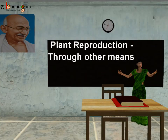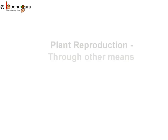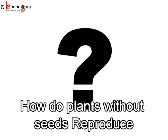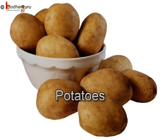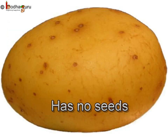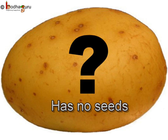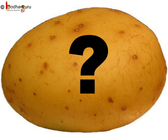Most of the plants reproduce through their seeds. But what happens to those plants which do not have seeds? How do they reproduce? Like in the case of children's favourite potato, it does not have any seeds. Then how does it grow into a new plant?